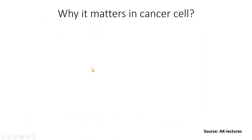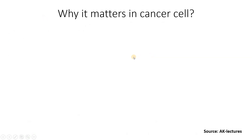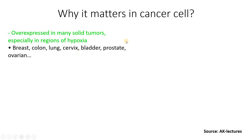So now let's see why this matters, and why do we care about this. The HIF-1 alpha and HIF-1 beta subunits come together, constitutive and inducible, forming HIF-1. Why does it matter in cancer cells? Because it has been found that they are overexpressed in many solid tumors, especially in regions of hypoxia. Breast, colon, lung, cervix, bladder, prostate, and ovarian — most of them have shown to have high gene activity and the presence of this protein in that solid tumor.